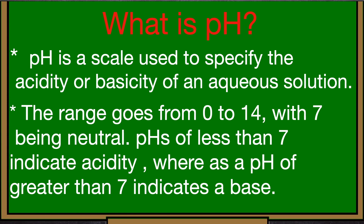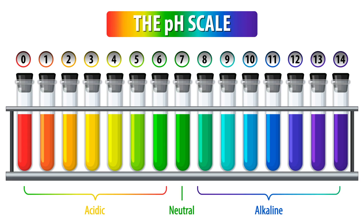The range goes from 0 to 14, with 7 being neutral. Water is neutral — it is neither basic nor acidic. A pH of less than 7 indicates acidity, and a pH of greater than 7 indicates alkalinity.